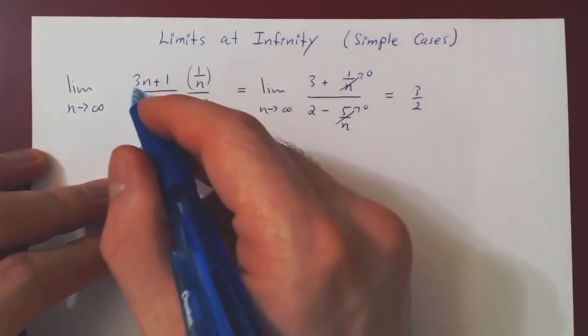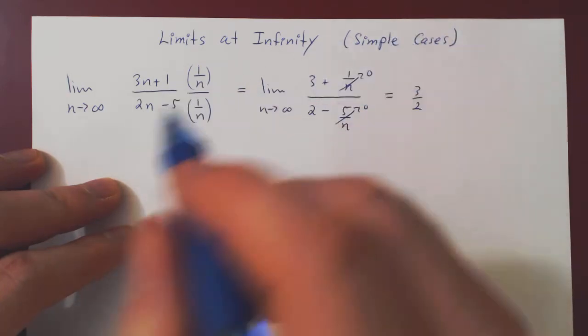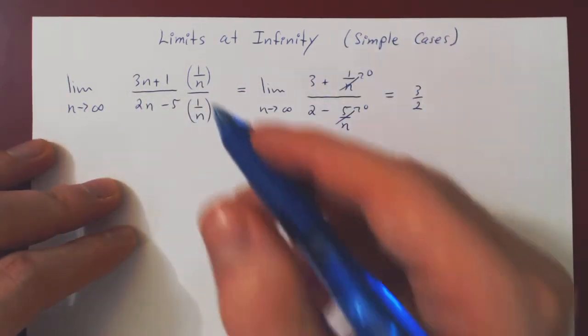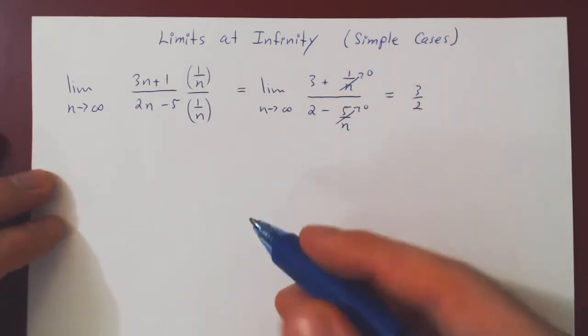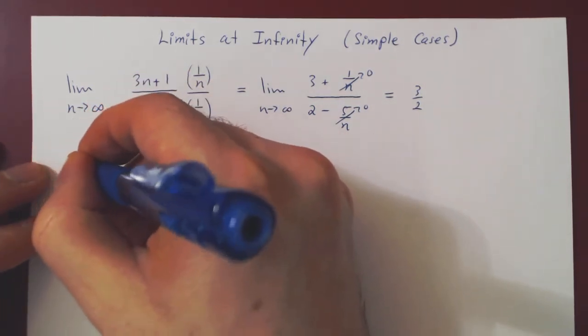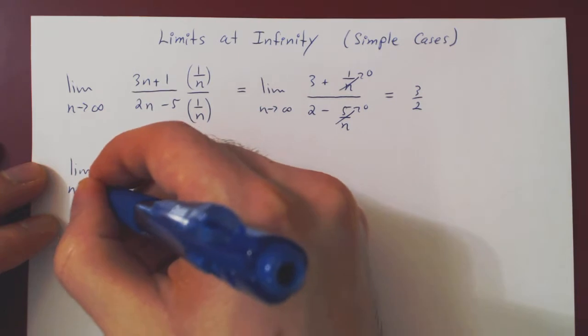And so no matter how large the polynomials may be, you will always have a one line solution, divided top and bottom by the largest power of n. Let's do one more short example.